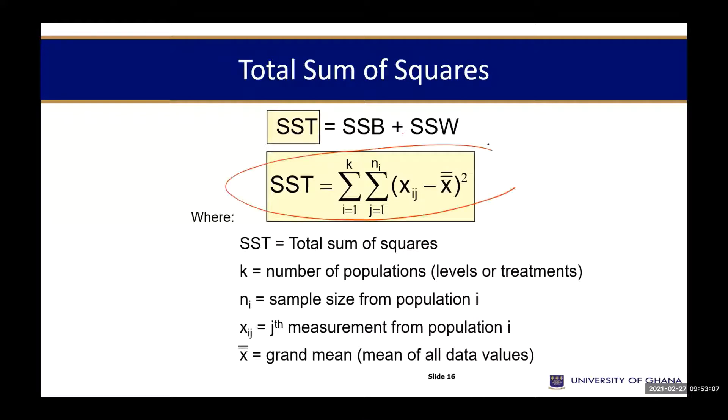Don't worry about this big formula here. It's just to say that the whole discussion for SSB and SSW can be written as this. We need to define some elements within the formula. K is simply the number of populations. Like I said, we have three COVID vaccines that we are going to use. The population is K, giving us vaccine one, vaccine two, vaccine three. So K will be equal to three, the number of independent populations.